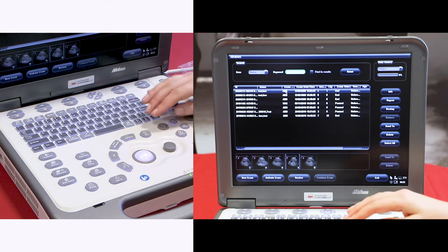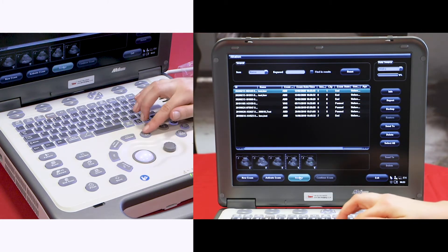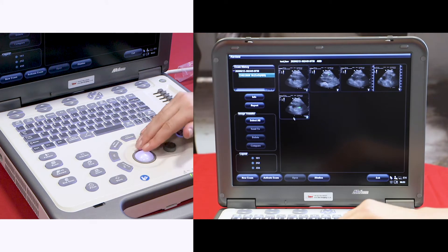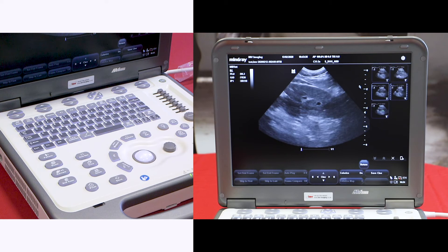To review any images, highlight the exam you want to review and come down to the review button. If you double-click with the set button on any of your images, it will come into full screen.